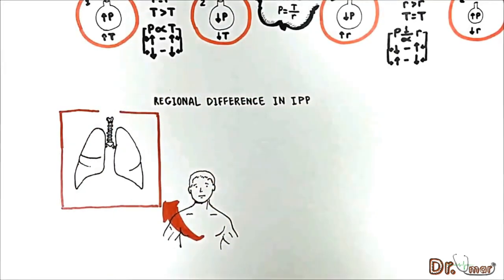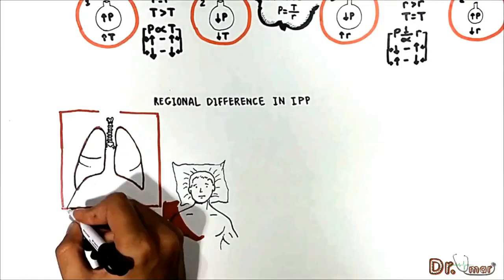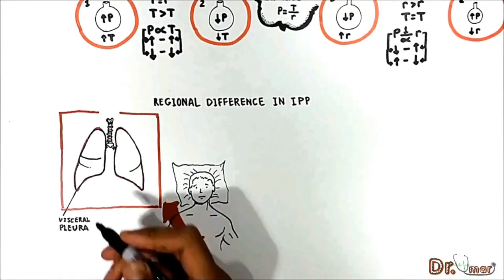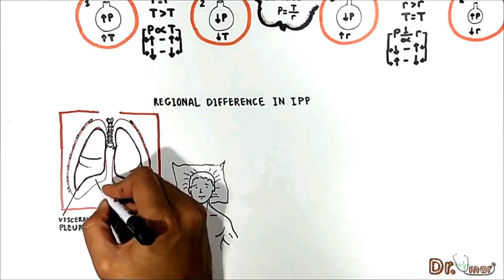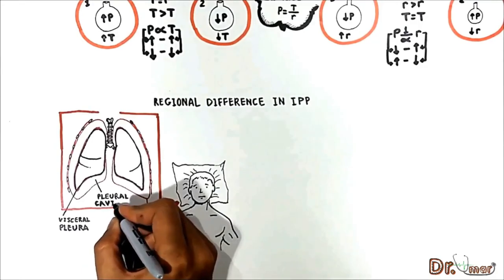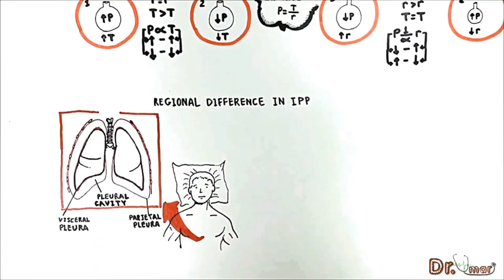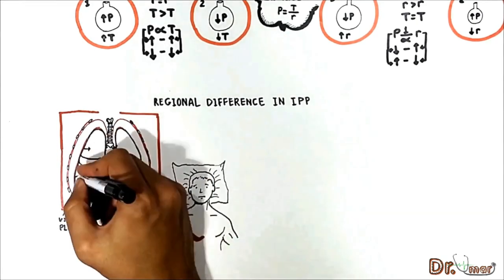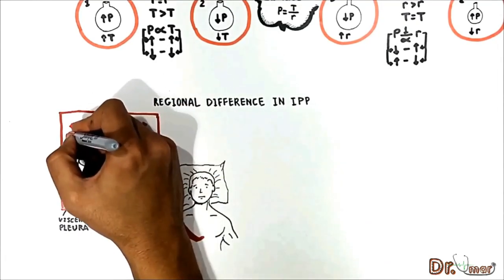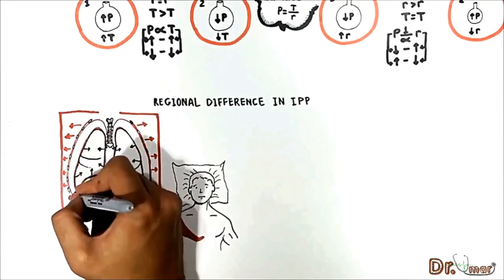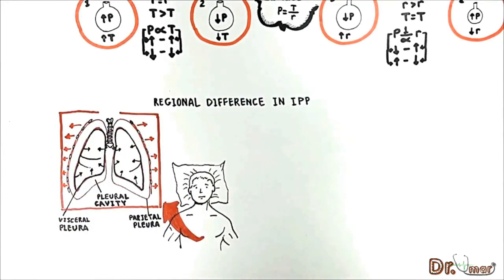Suppose a man is lying on a bed. The lung surface is covered by visceral pleura and the inner surface of the thoracic cavity is covered by parietal pleura. The pleural cavity is the thin fluid-filled space between these two pleura. At FRC the lung tries to collapse and the chest wall tries to expand due to recoil force, creating a negative intrapleural pressure of negative 5 cm water.